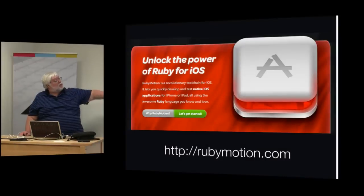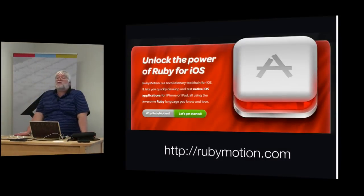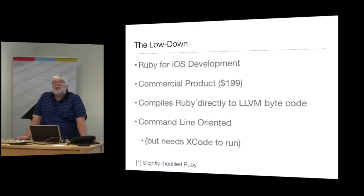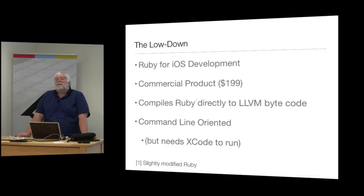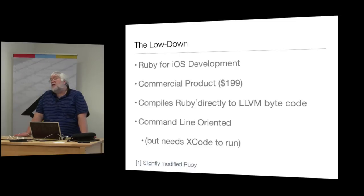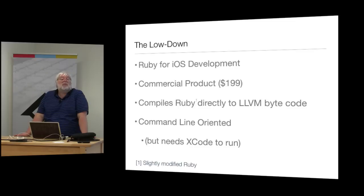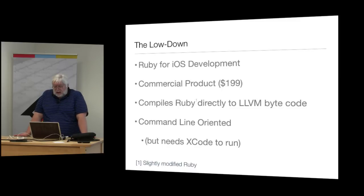RubyMotion is Ruby for the iOS device. It is a commercial product at rubymotion.com for $200, though they sometimes have sales. You write a slightly modified Ruby program that is not interpreted - it compiles down to LLVM bytecodes that run directly on your iOS device. The binaries produced are very close to what you'd get writing in Objective-C, so there's very little performance overhead.